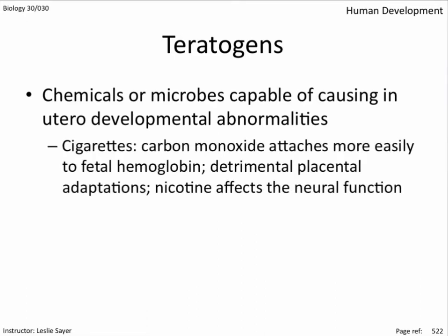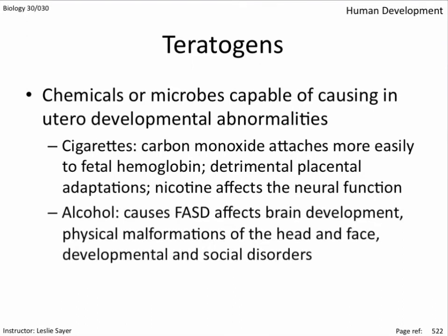Cigarettes are a teratogen because carbon monoxide attaches more easily to fetal hemoglobin, causing detrimental placental adaptations, and nicotine also affects neural function. A smoking mom, or one constantly exposed to second-hand smoke, will generally have underweight babies and an increased risk of stillbirths, premature deliveries, miscarriages, and later behavioral and intellectual abnormalities. No amount of cigarette smoke is a safe amount.